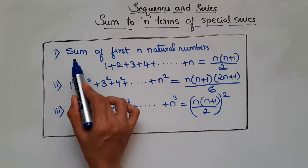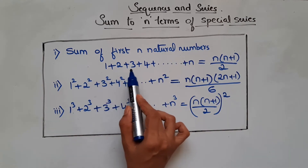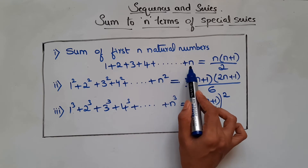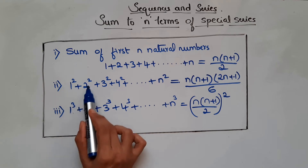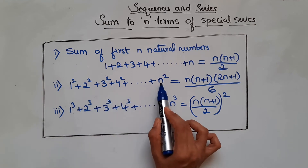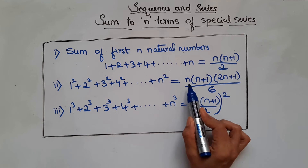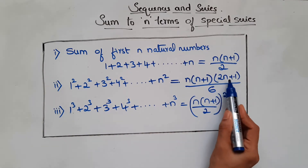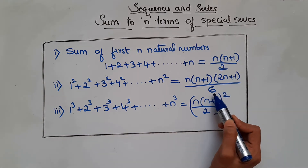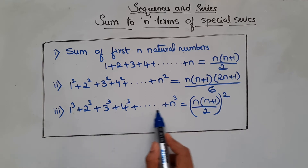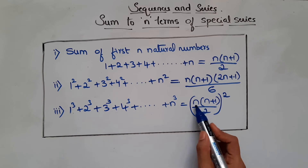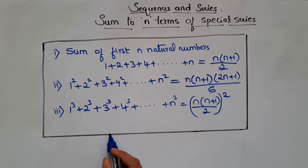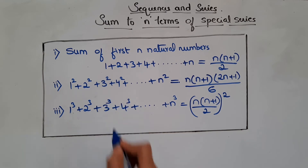The three formulas are: First, the sum of the first n natural numbers — 1 + 2 + 3 + ... + n — equals n(n+1)/2. Second, the sum of squares — 1² + 2² + ... + n² — equals n(n+1)(2n+1)/6. Third, the sum of cubes — 1³ + 2³ + ... + n³ — equals [n(n+1)/2]². Pause the video and note these down.